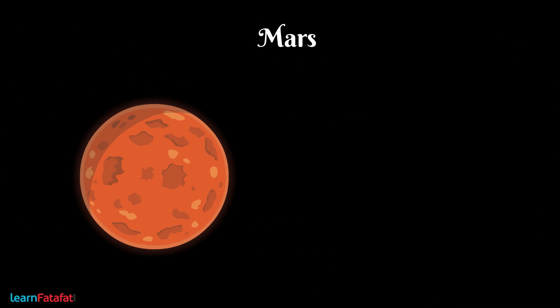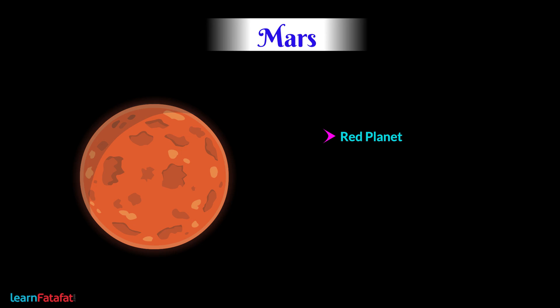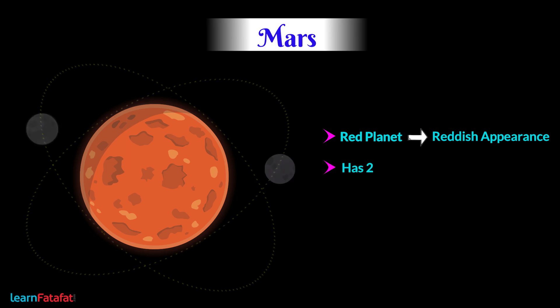Mars. The red planet of the solar system is Mars. It is called the red planet because of its reddish appearance. It has two natural satellites.